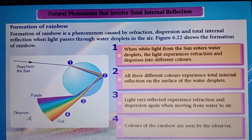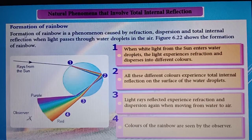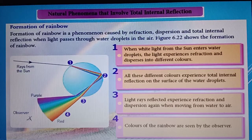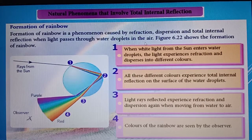Look at the natural phenomena that occur around us. For example, the formation of a rainbow. Formation of a rainbow is a phenomenon caused by refraction, dispersion, and total internal reflection when light passes through water droplets in the air.